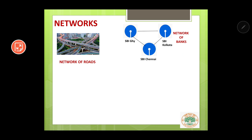If you buy only a single computer at home and use it alone, it is not called a network. But buying more than one computer will also not form a network. You need to connect them — only then a network will be formed. For example, let us say this is PC1 and this is PC2.